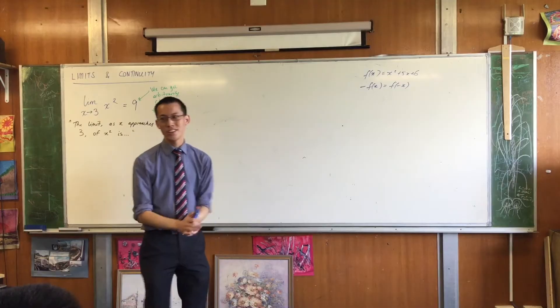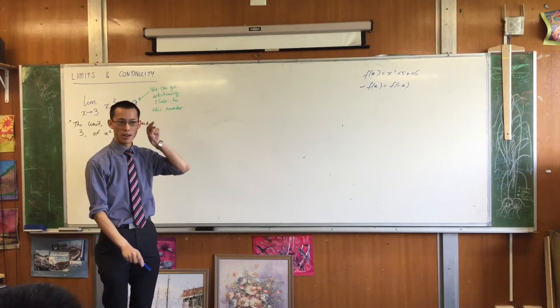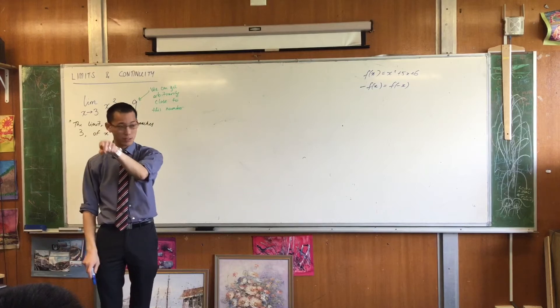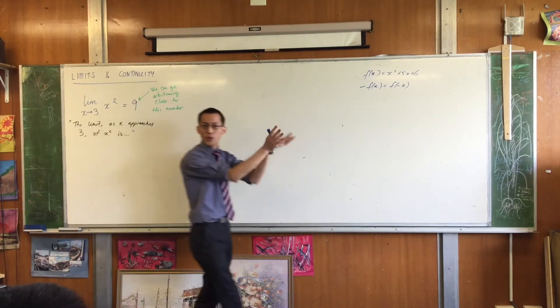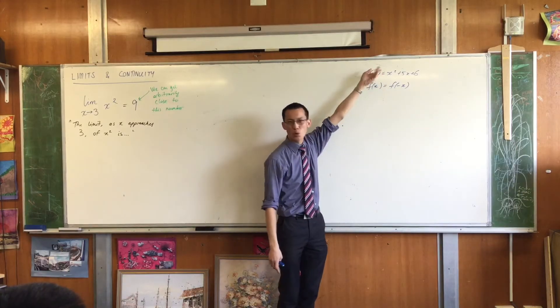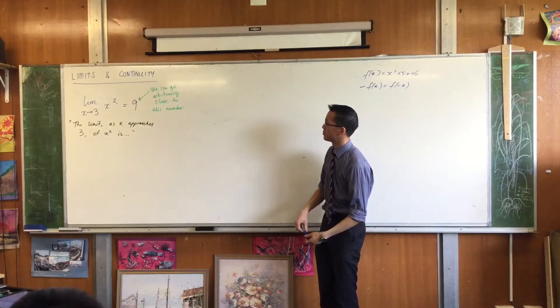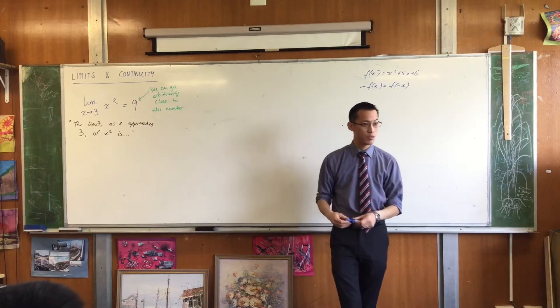It's an odd function. It's going to have point symmetry or rotational symmetry around the origin, right? Right at 0, 0. So when you have that function notation, you can talk about properties that you really couldn't talk about before. It's the same deal with limit notation and limits and continuity, which is a new idea we're going to get into.